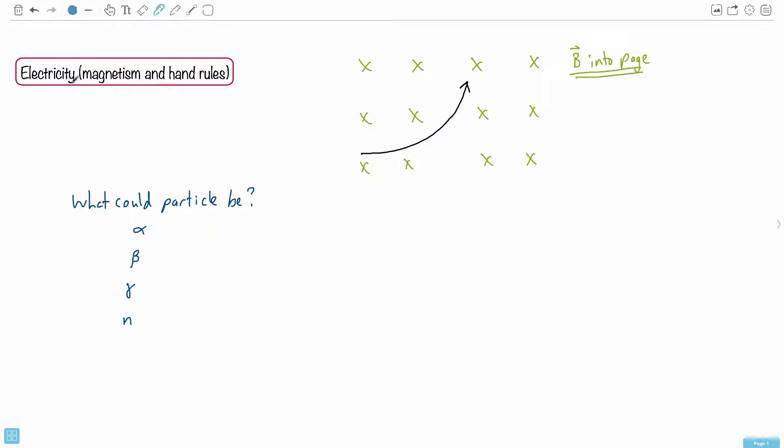This question is about electricity and magnetism, and basically using the hand rules. Let's see what that means. We're told that we have a particle, and we don't know what kind of particle it is.